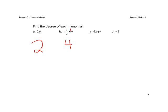For C, we have an x and a y again, we're just adding our exponents. So we have 3 plus 3, we get a degree of 6.